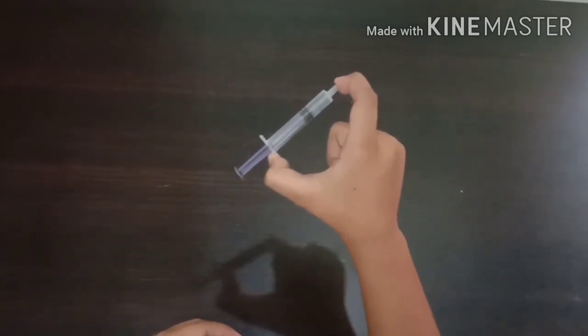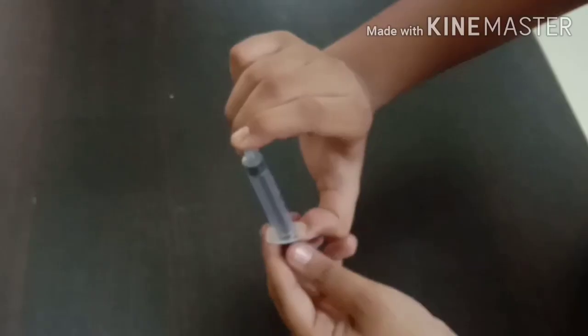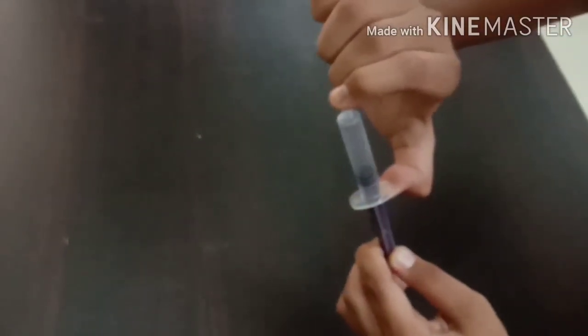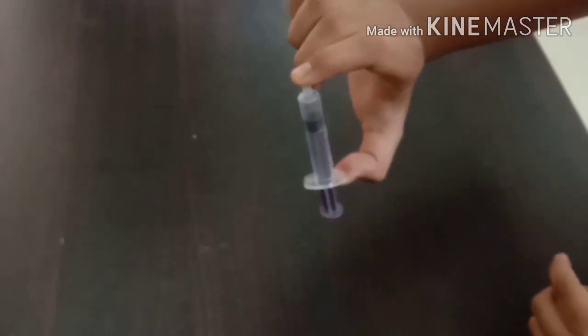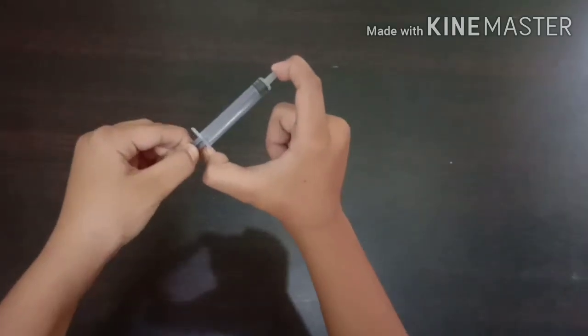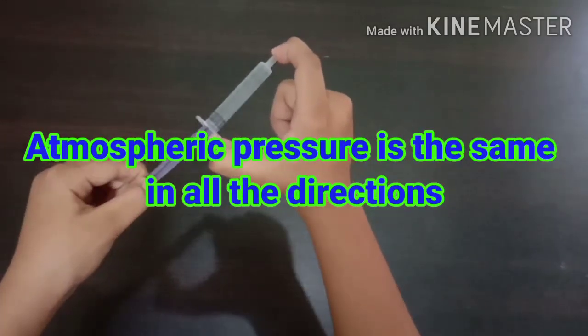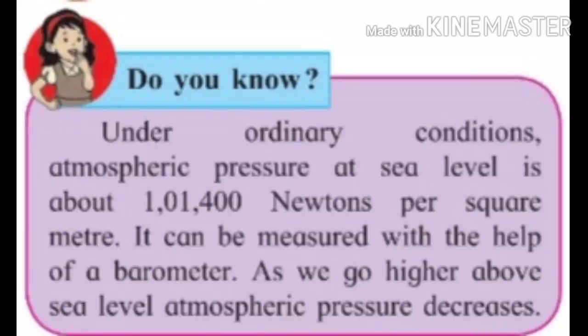If this experiment is repeated holding the syringe in different positions — vertical, horizontal, or inclined — the piston is found to go in to the same extent in all cases. From this we can infer that atmospheric pressure is the same in all directions. Under ordinary conditions, atmospheric pressure at sea level is about 1,01,400 newtons per square meter. It can be measured with a barometer, and as we go higher above sea level, atmospheric pressure decreases.